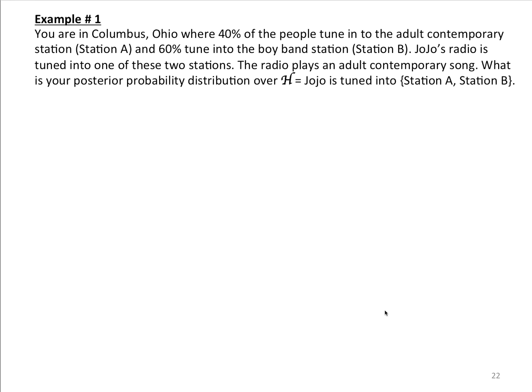In example one, you are in Columbus, Ohio, where 40% of the people tune in to the adult contemporary station, station A, and 60% tune in to the boy band station, station B. I never miss an opportunity to make fun of those good old Buckeyes and their terrible taste in music. JoJo, who is one of these Buckeyes, his radio is tuned into one of these two stations. The radio plays an adult contemporary song.